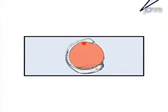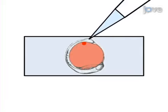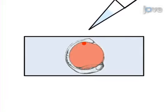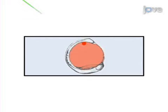Then, the embryos are mounted in depression slides, and fluorescent beads are injected into the fluid-filled vesicle lumen of the KV.